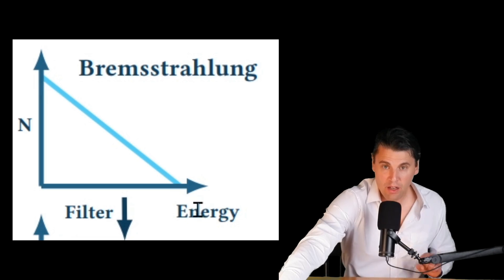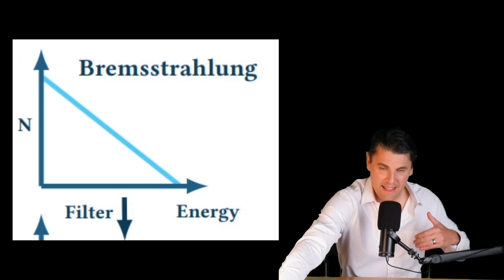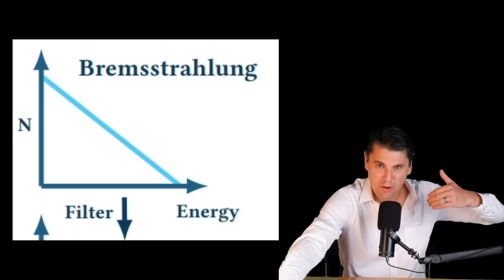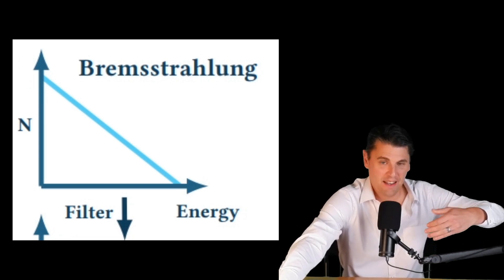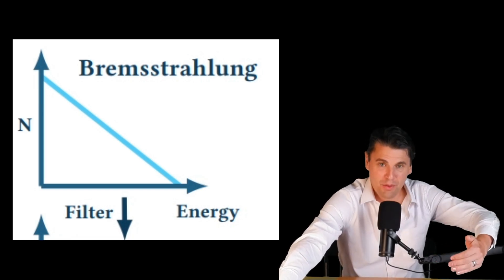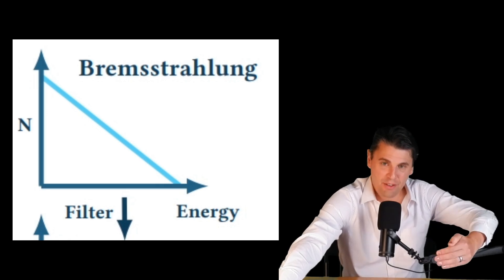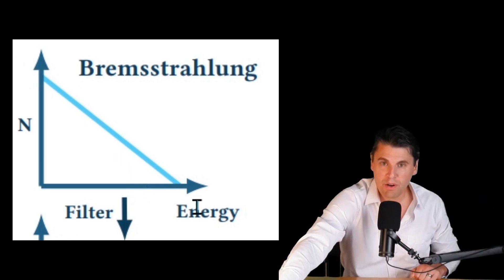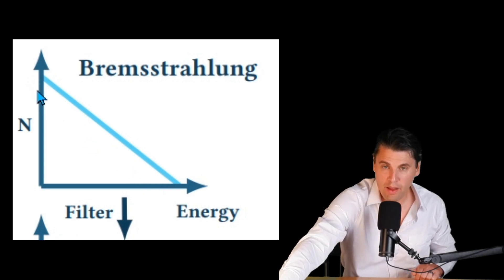Bremsstrahlung, as we've talked about, makes a nice continuous distribution. If you had just a perfect bremsstrahlung distribution, and the x-rays actually were just generated inside the anode, and they didn't have to leave the anode and pass through the tube and pass through additional filters, you would have something that looks like this, where you have more x-rays at the lower energy and then fewer at the higher energies.